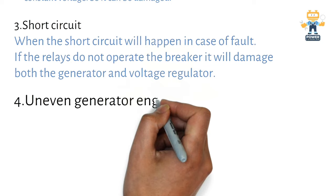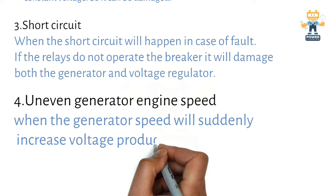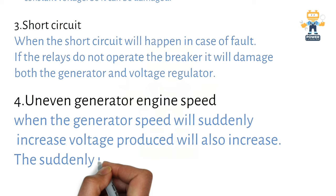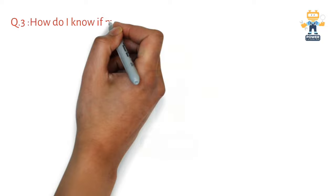Cause number four: Uneven generator engine speed. If your engine is hunting and the engine speed is not stable, this also causes AVR failure. When the generator speed suddenly increases, voltage produced will also increase. The suddenly increased voltage will damage the AVR.